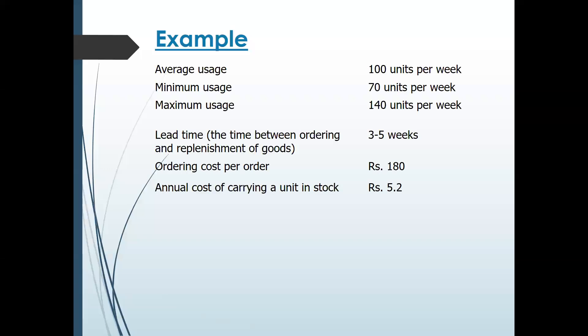Starting with the practical question. Average stock usage is 100 units per week. Minimum usage is 70 units per week. Maximum usage is 140 units per week. In a business, usage is based on demand — sometimes demand is more, so maximum level is 140, minimum level is 70, and average is 100 units.